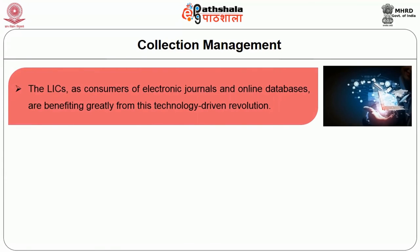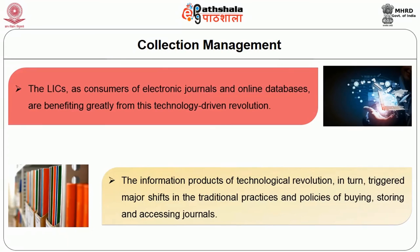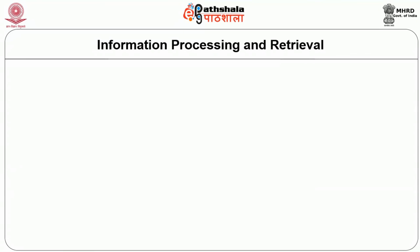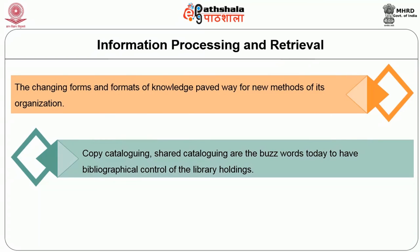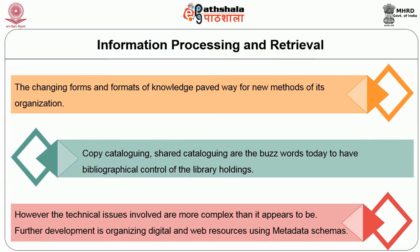The internet and web technology provide unparalleled media for delivery of information with greater speed and economy. Web-based electronic information products have eliminated paper, physical storage and transportation costs, and also offer possibilities for incorporating multimedia and hyperlink features into electronic documents. More web-based electronic information products are available and being utilized, creating pressure on traditional libraries which are committing large portions of their budgets to procuring or accessing web-based online or full-text search services, CD-ROM products, online databases, and multimedia products. ICT has also brought changes in information processing and retrieval; changing forms and formats of knowledge have paved the way for new methods of organization. Copy cataloging and shared cataloging are buzzwords today for bibliographical control of library holdings. Further development involves organizing digital and web resources using metadata schemas.